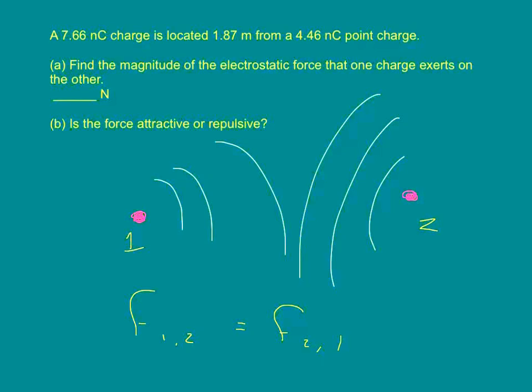Question number one says, a 7.66 nanocoulomb charge is located 1.87 meters from a 4.46 nanocoulomb point charge. Find the magnitude of the electrostatic force that one charge exerts on the other. The answer is in Newtons. Is the force attractive or repulsive? So here's what we have.